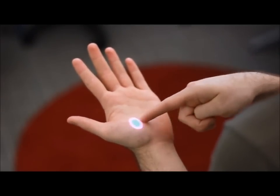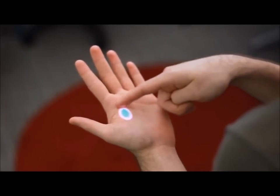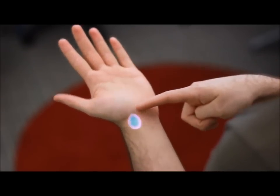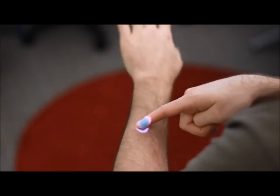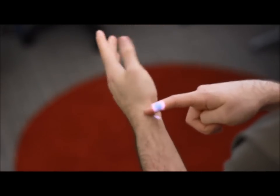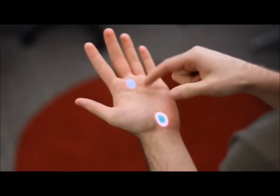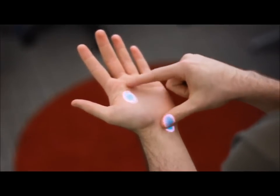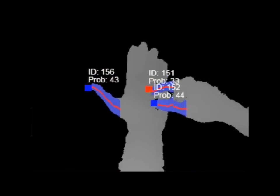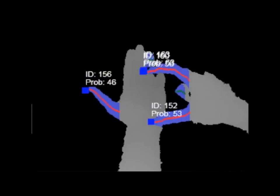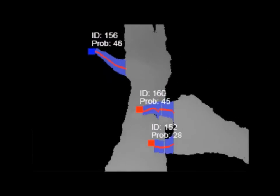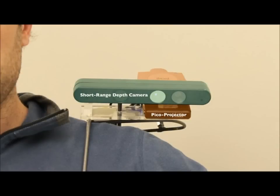Importantly, these interactions can proceed on the go, with no calibration, training, or instrumentation of the environment or the user beyond our shoulder-worn system. Our finger-tracking approach can localize multiple fingers in 3D space and determine if they are hovering above or clicked on a surface. Our system also identifies, tracks, and classifies surfaces suitable for projected interfaces. The primary components are a short-range depth camera and a picoprojector. Please refer to the paper for details.